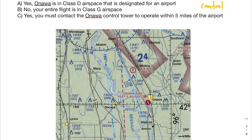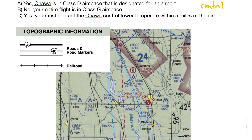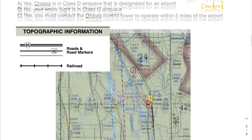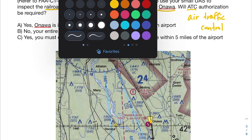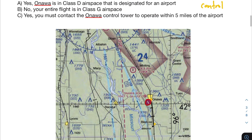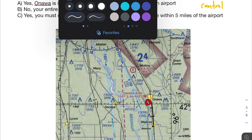Within the problem it mentions railroad tracks and two cities, so let's find them. Here's Ottawa, here's Blanco. As the legend shows, railroad tracks are signified by a black line with rail markings along it. We're right next to an airport here, but just being near an airport doesn't necessarily mean we're in controlled airspace. Let's go through all the different airspace types and see if we're within one.